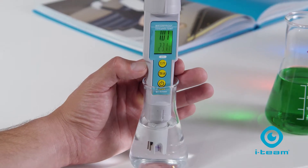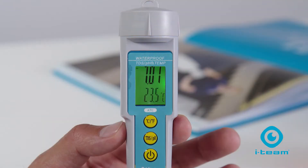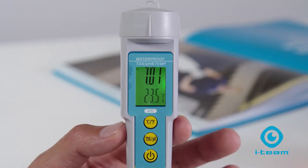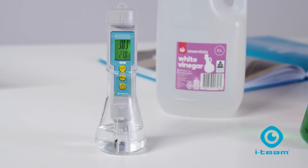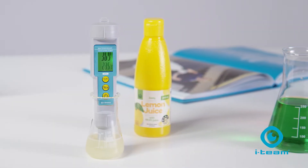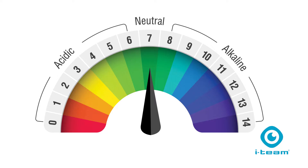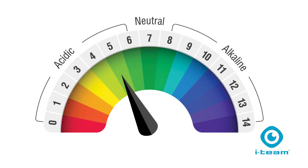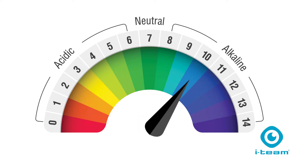Here we've got a pH tester and we are testing pure water which is neutral at pH 7. Examples of common acids would be vinegar, lemon juice or hydrochloric acid, and common alkalines would be bleach, spray and wipe and degreasers. For each whole number you move away from pH 7, the acidity or alkalinity increases by a factor of 10.